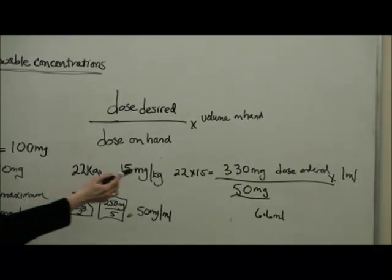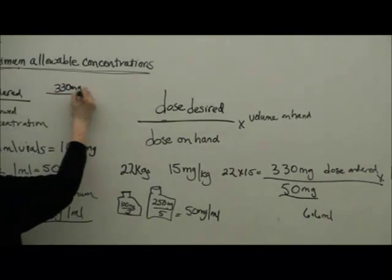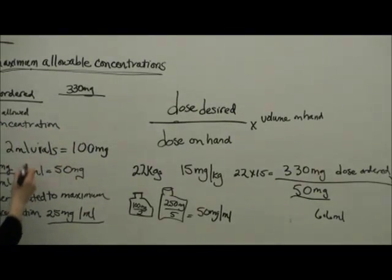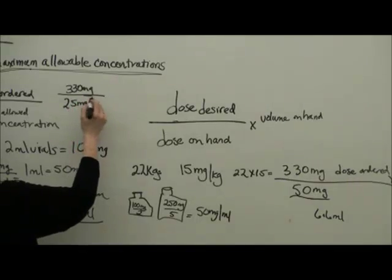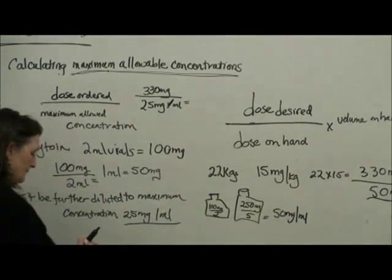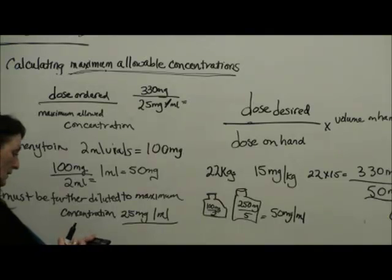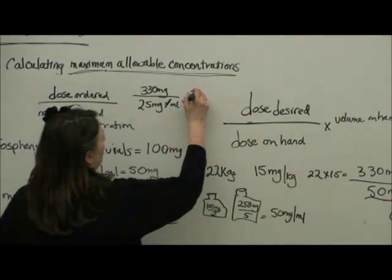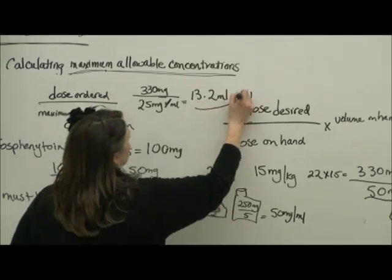So then I go, my dose ordered is 330 milligrams. My maximum allowed concentration is 25 milligrams per milliliter. So I figure 330 divided by 25. I have to have a minimum volume of 13.2 milliliters.